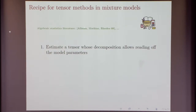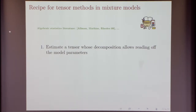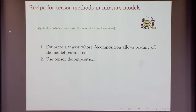This is generally the recipe for tensor methods in mixture models, and it's been used before the machine learning works — also in the algebraic statistics literature. The general outline is: first you estimate a tensor whose decomposition allows you to read off the model parameters from your data. Once you have that tensor, you decompose it to find the decomposition and recover the parameters.